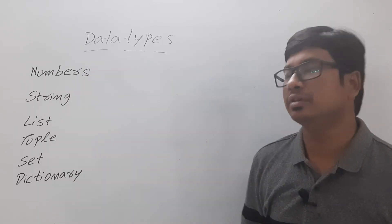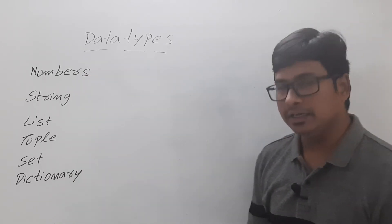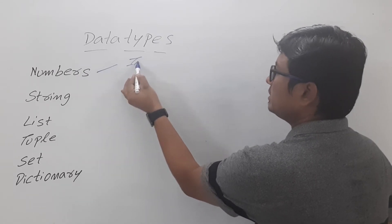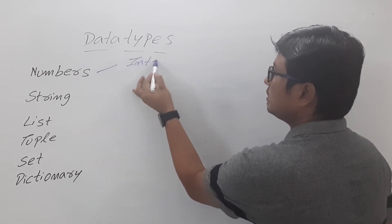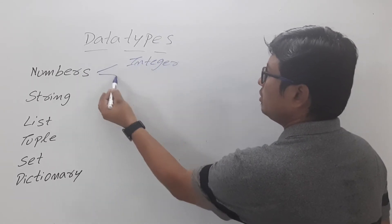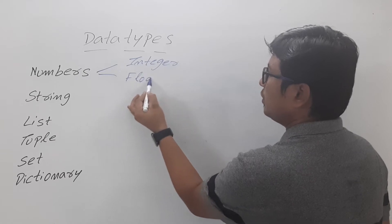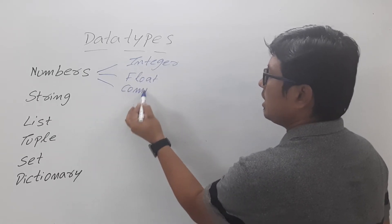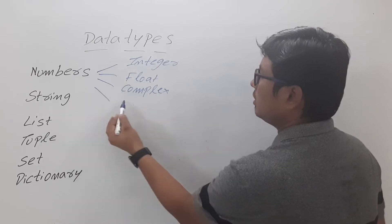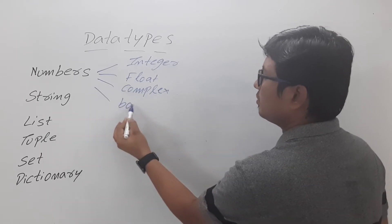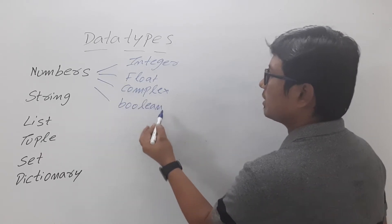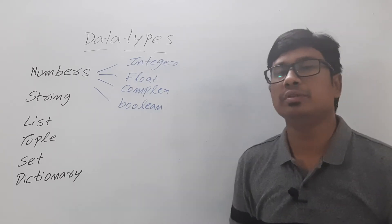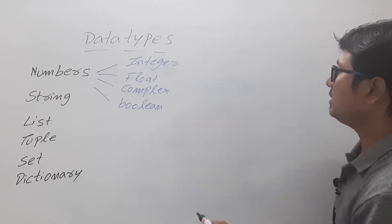First let me discuss about the numbers data type. In the numbers data type we have integer, we have float, we have complex, and we also have boolean variables. Now first let me talk about the integer.